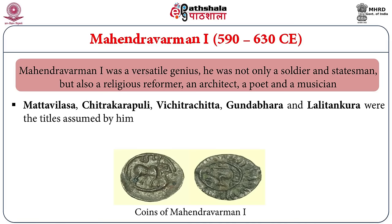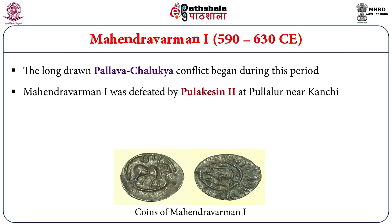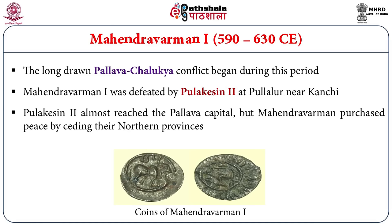During his time, politically, a long-drawn Pallava-Chalukya conflict began. It was during the time of Mahendra Varman I that the great Chalukyan ruler Pulakesi II invaded Kanchi. A great battle occurred between Mahendra Varman and Pulakesi II, in which Mahendra Varman suffered defeat. As a result, Pulakesi II almost reached the Pallava capital, but peace was concluded between the two dynasties and many northern portions were taken over by Pulakesi II. This was the beginning of the Pallava-Chalukya conflict, which continued for another two centuries.